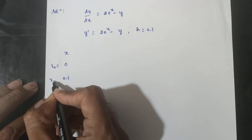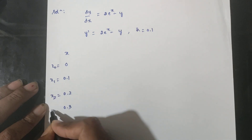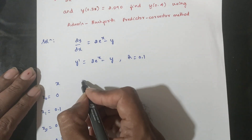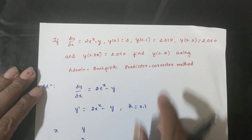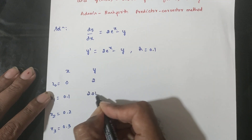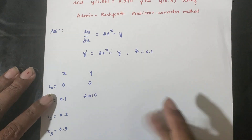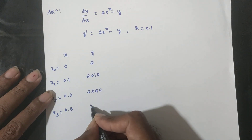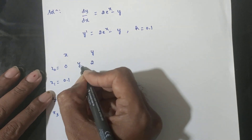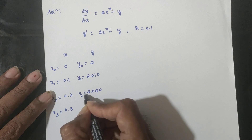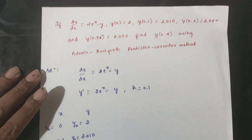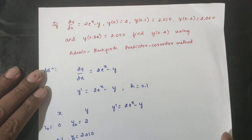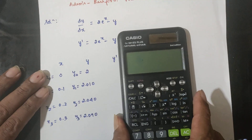The x subscripts are x naught, x1, x2, x3. The corresponding y values are y naught, y1, y2, y3, and y dash is equal to 2e^x minus y.